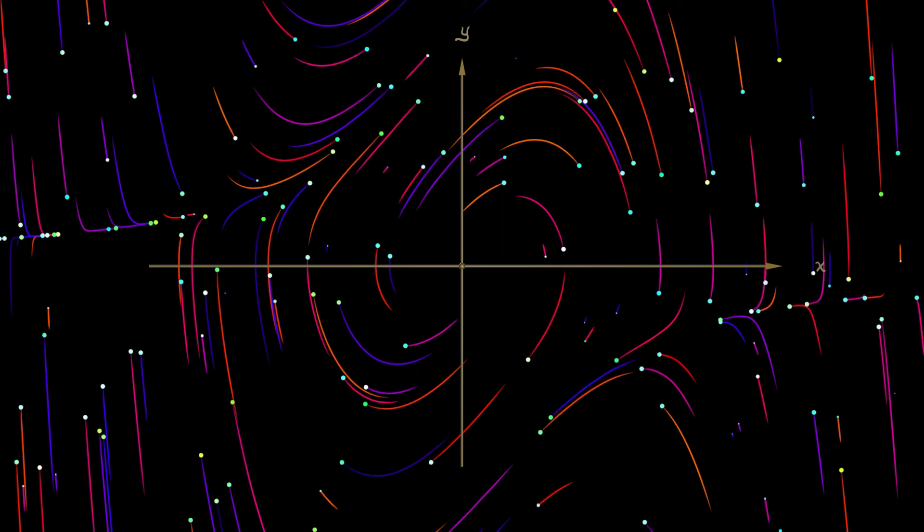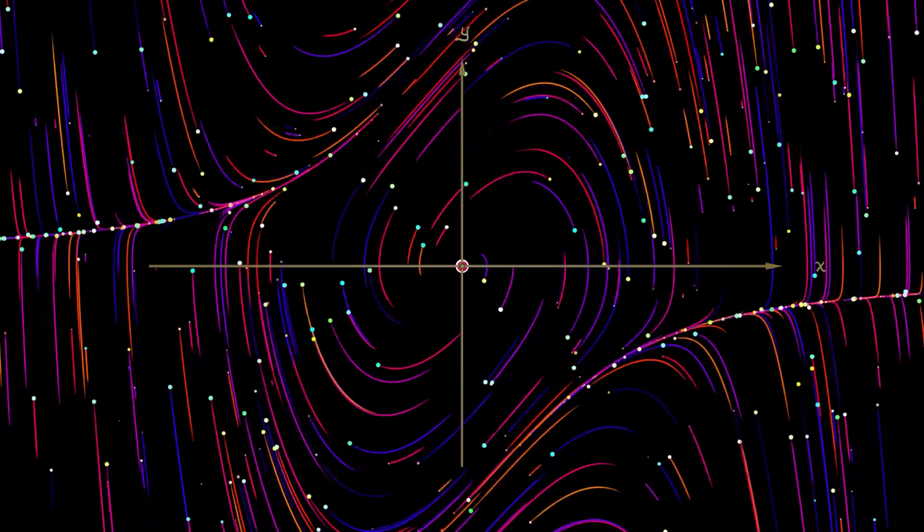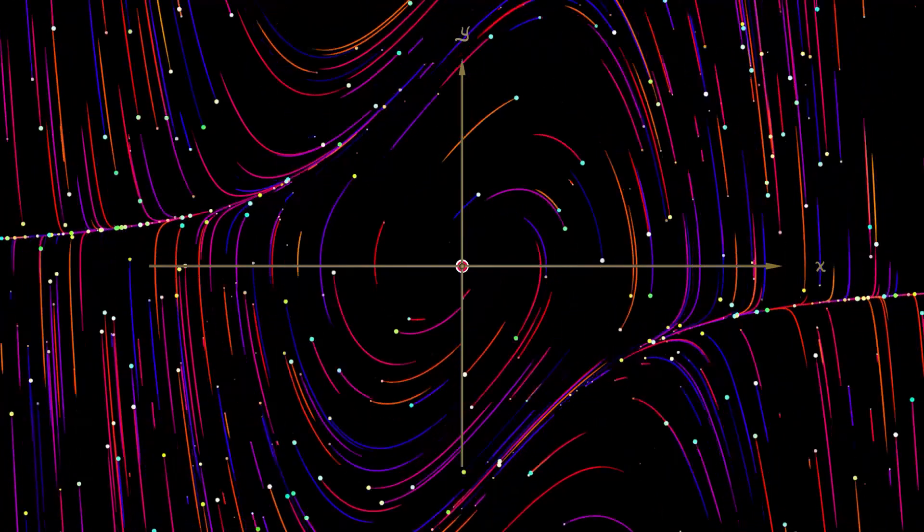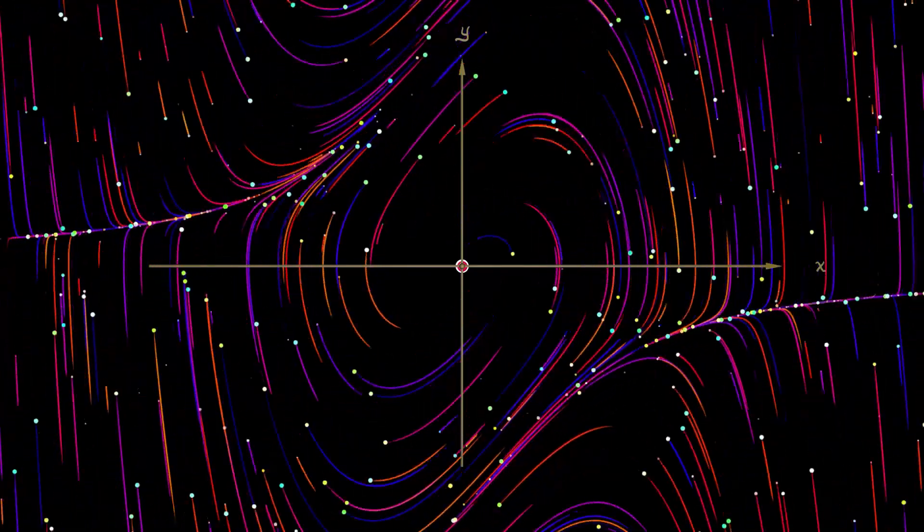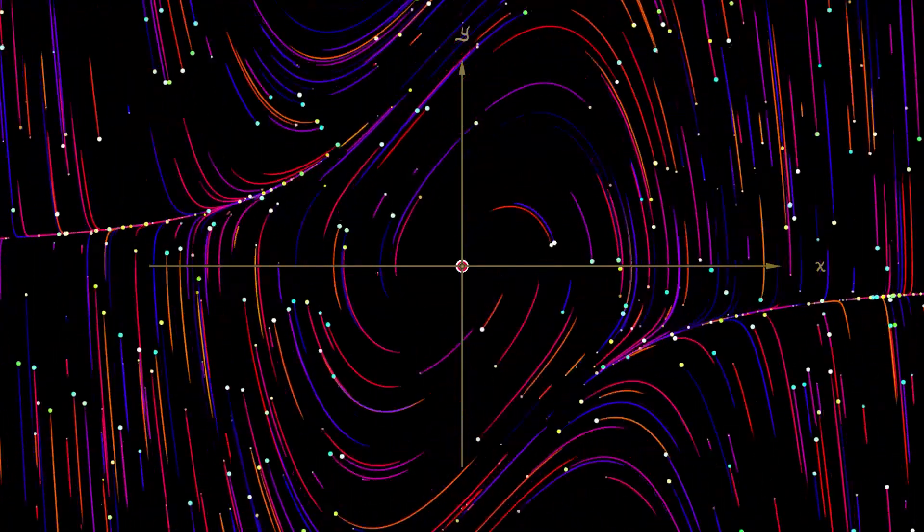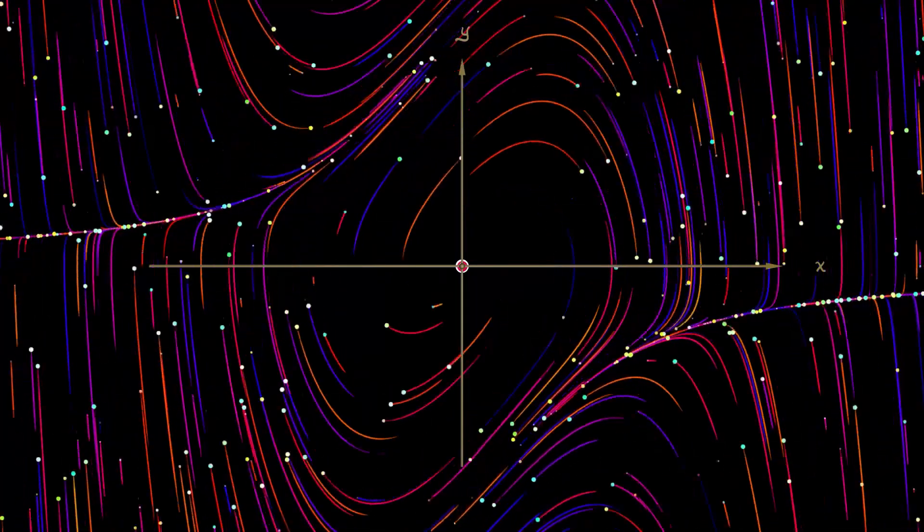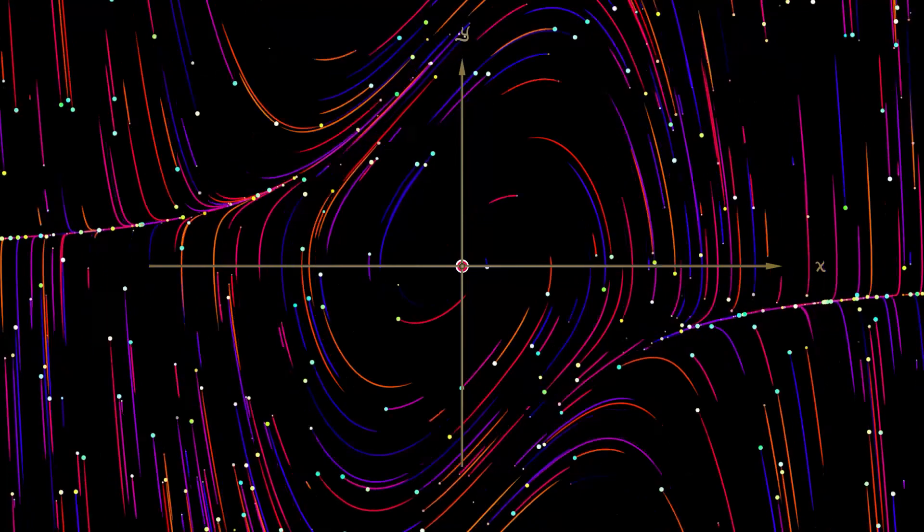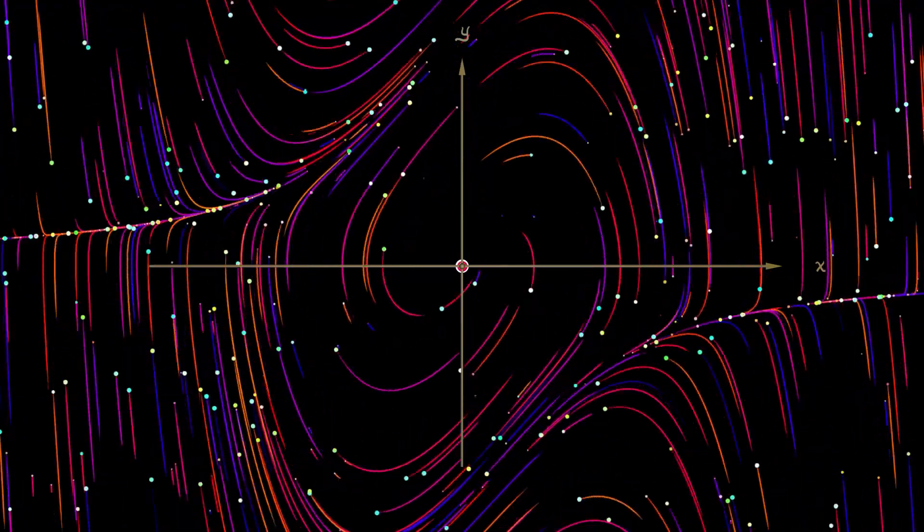And what we see is that the origin is in fact a spiral source. Those nonlinear terms contribute to an instability there. This is maybe not surprising since you have that negative damping for small values of x. But because you have positive damping for large values of x, what does that mean?